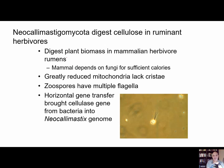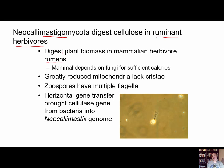Finally, we have another phylum, the Neocallimastigomycota. The mastig in the name translates to whips, referencing the fact that these produce multiple flagella on their spores. These organisms live symbiotically within ruminant herbivores — animals like cows or sheep — which have a multi-chambered stomach, one chamber being the rumen. Within the rumen, the fungi help make cellulose from ingested grass available to the ruminant mammal. Otherwise, it's hard to make a living just eating grass — you can't extract enough energy unless you can break down the cellulose. Cellulose is the same stuff that paper is made of.